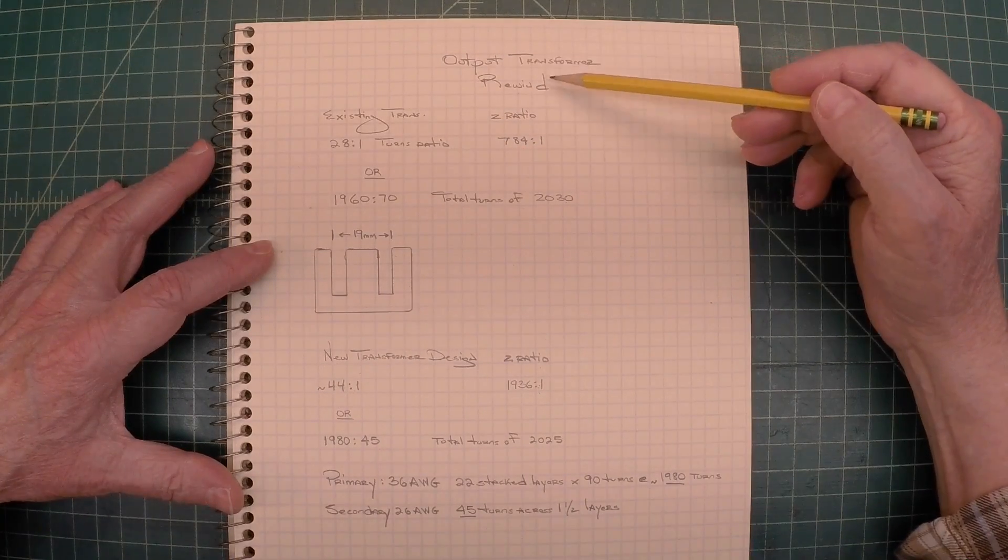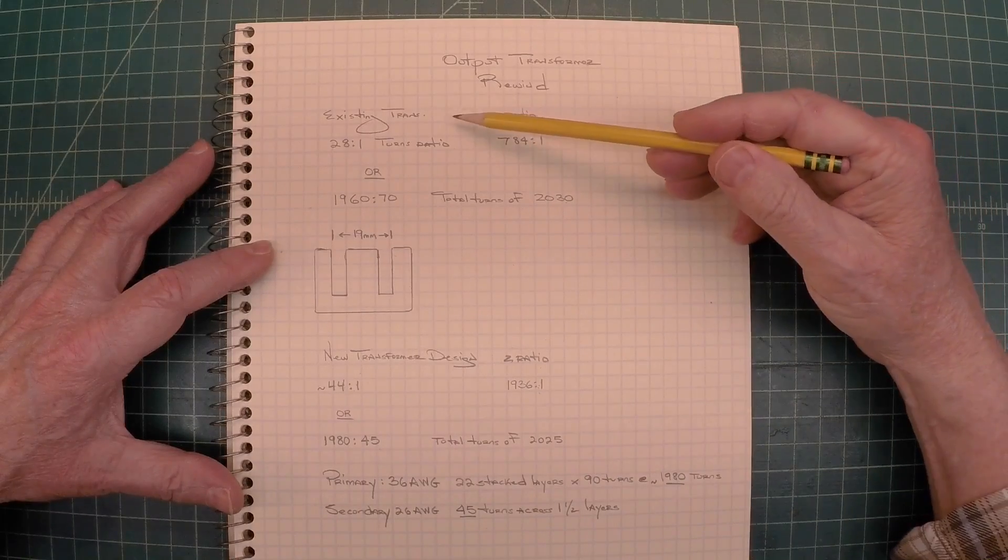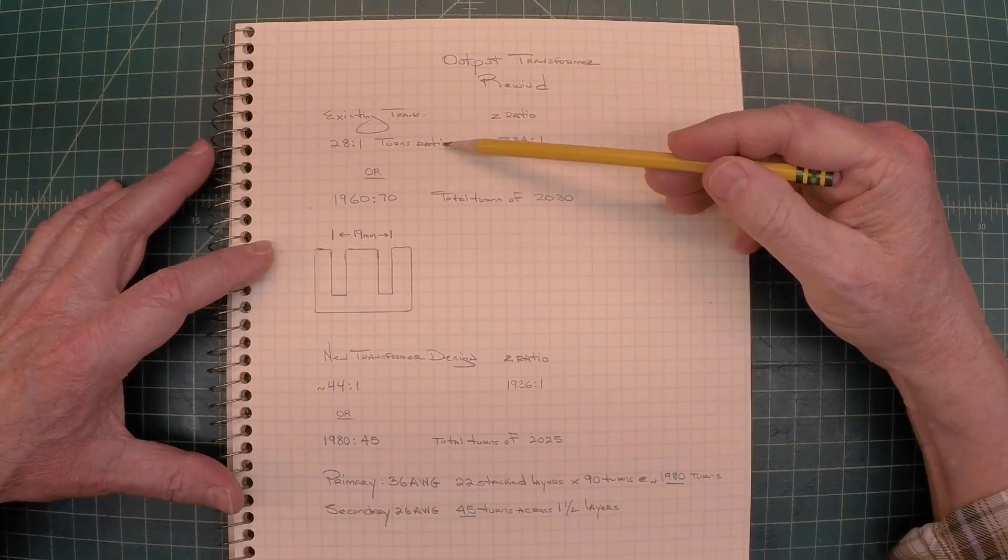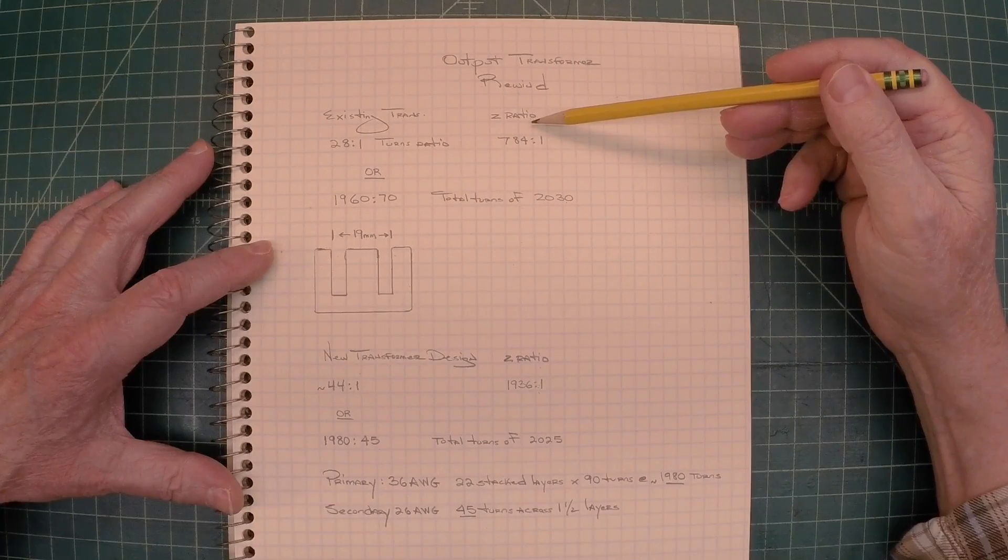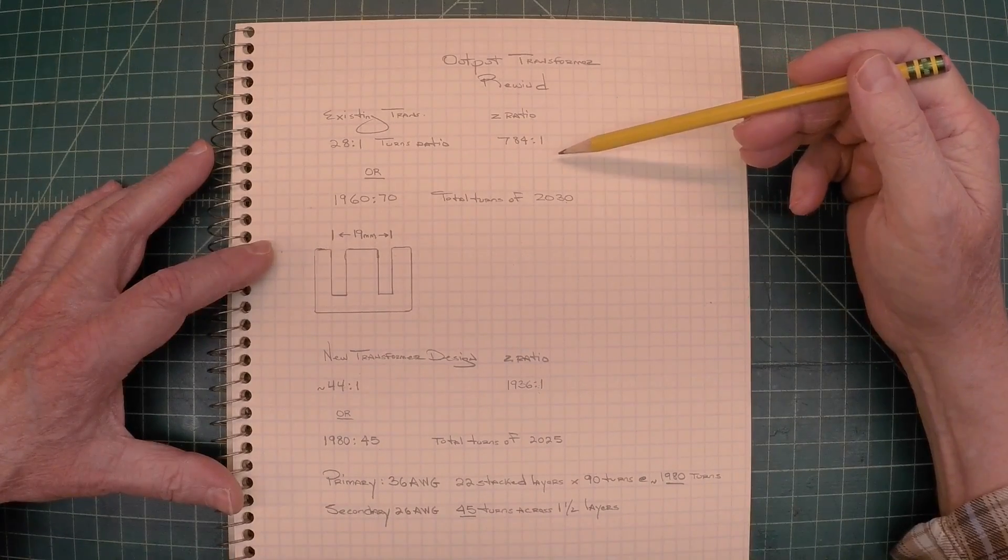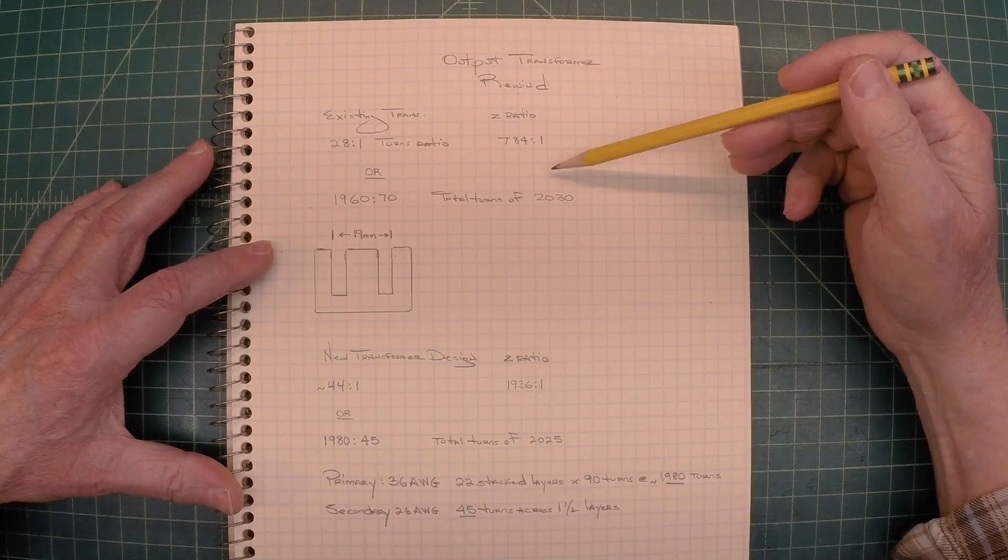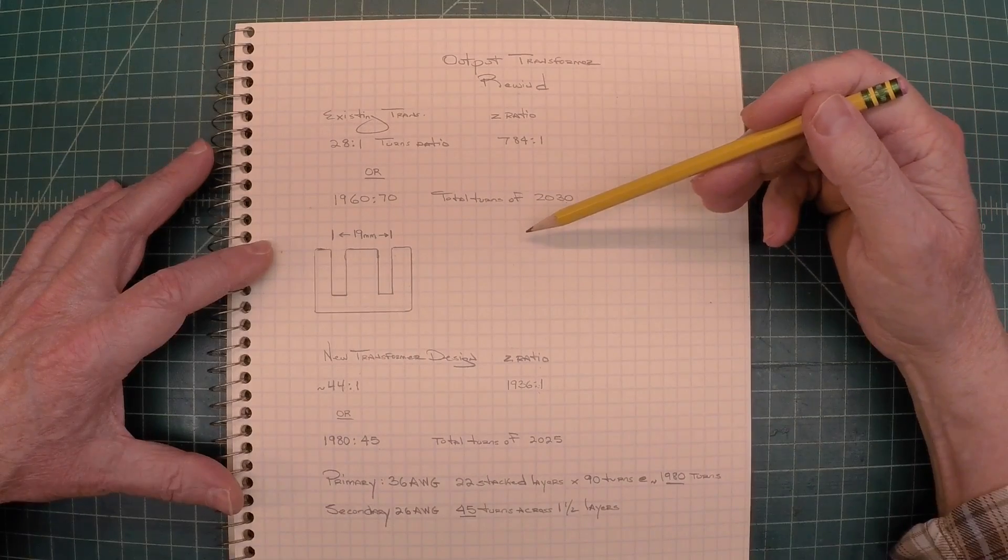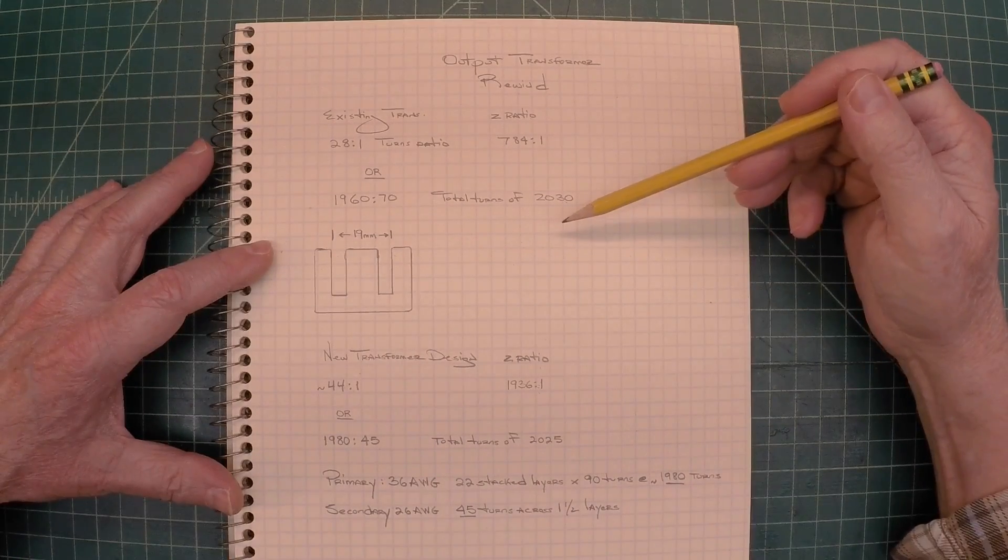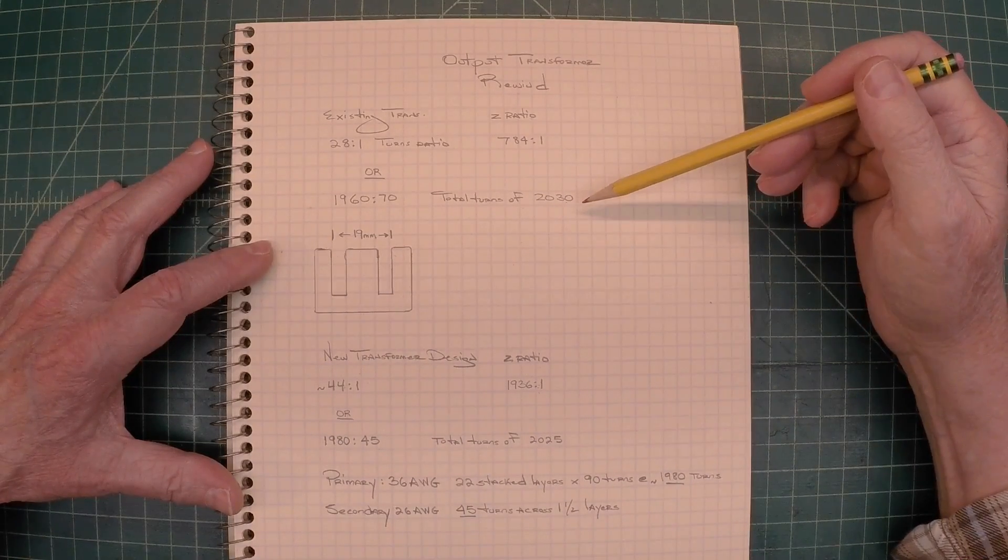To recap real quick, I'm going to do a rewind. The existing transformer, 28 to 1 turns ratio, gave us an impedance ratio of 784 to 1. We already said that's too low, not a good match for the voice coil of the existing speaker in addition to the Type 41 tube.